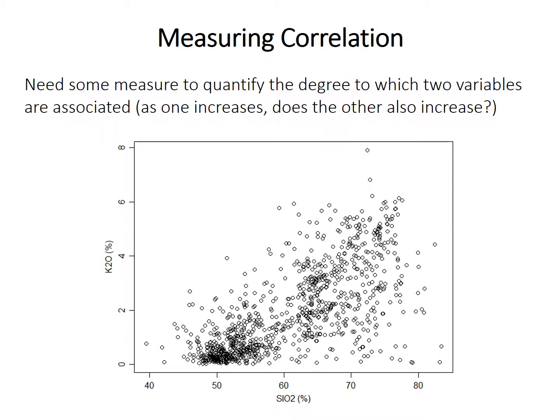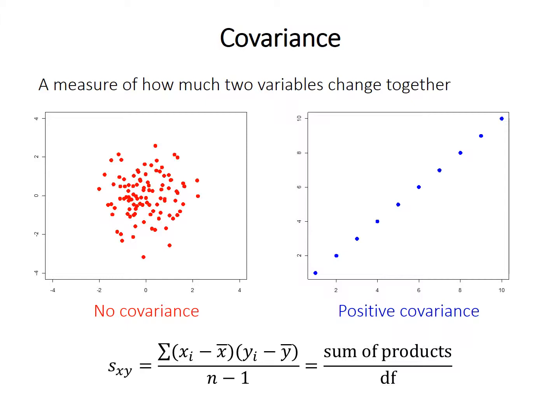We need some way to measure the degree of association between two variables: as one increases, does the other also increase, and how closely do they change together? We'll start with something called covariance. Covariance is a measure of how much two variables change together — as one increases, does the other also increase by the same amount? It's calculated as the sum of products divided by the degrees of freedom.